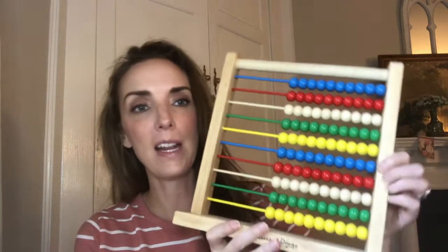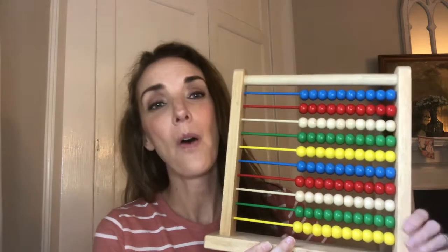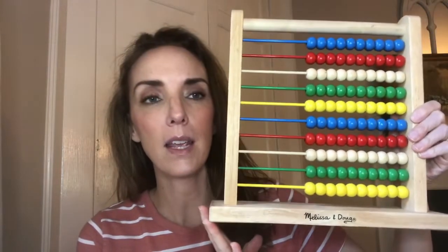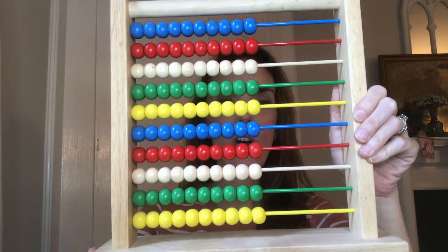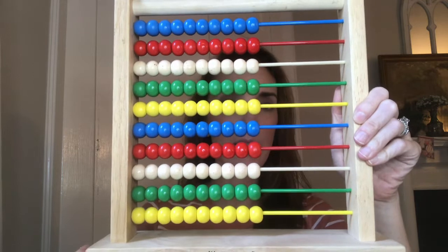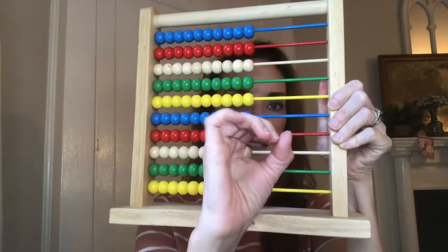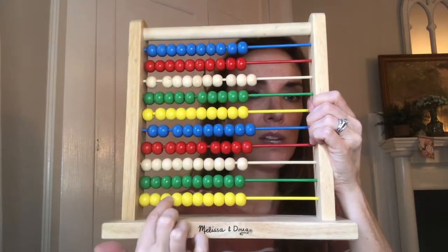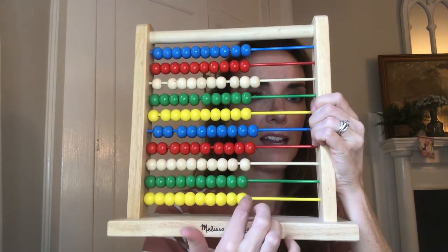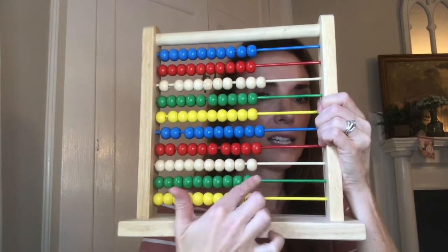I have a smaller abacus where I wrote the place values — ones, tens, hundreds — on it at the beginning just to get my kids familiar. Since I'm a mirror image of you, to start it should look like this: all the beads lined up on the left side, which means zero. There are ten beads on each row — one through ten — so ten ones, ten tens, ten hundreds, and so forth.